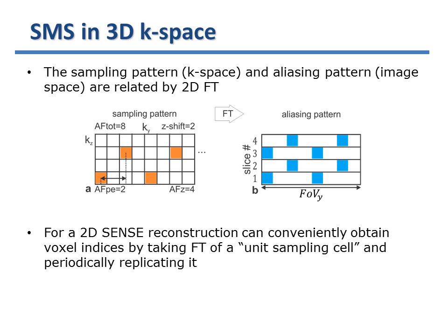If we decide to use a 3D k-space-based representation, the sampling pattern in KY-KZ space is given by the in-plane acceleration, the number of simultaneously excited slices, and the CAIPI blip pattern used to sample the KZ direction. Here we see an example of four slices acquired with CAIPI factor 2 and two-fold in-plane acceleration. The sampling pattern then yields the aliasing pattern in the image domain — that is, the aliasing in the y-direction — by two-dimensional Fourier transform. The voxel indices for each SENSE subproblem are given by a shifted version of the aliasing pattern.